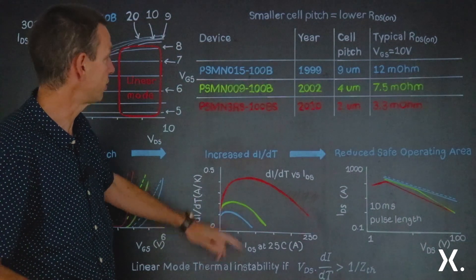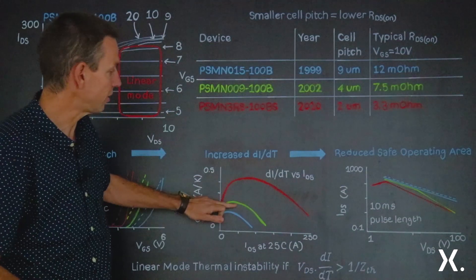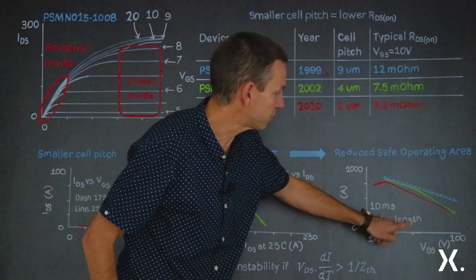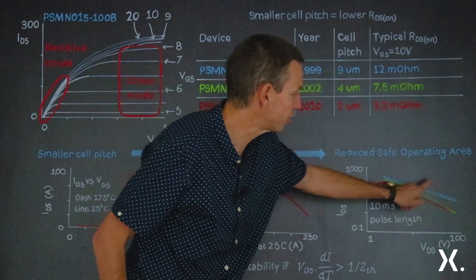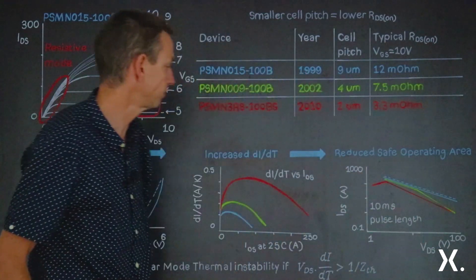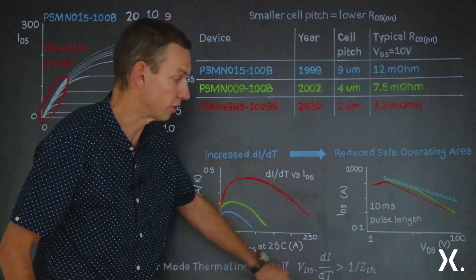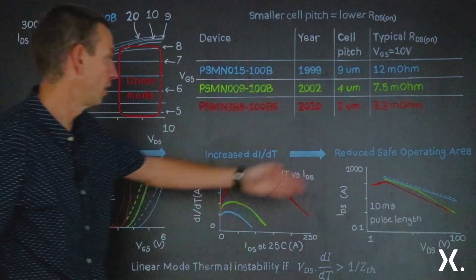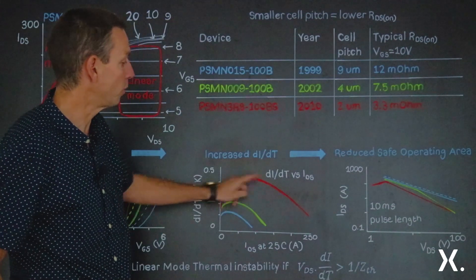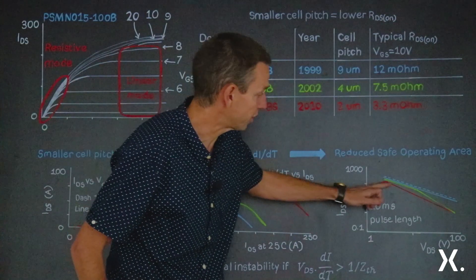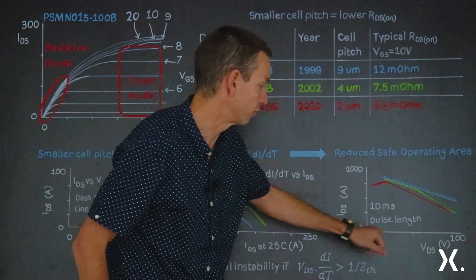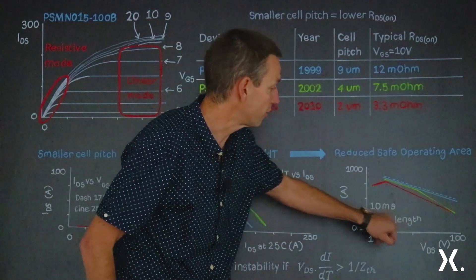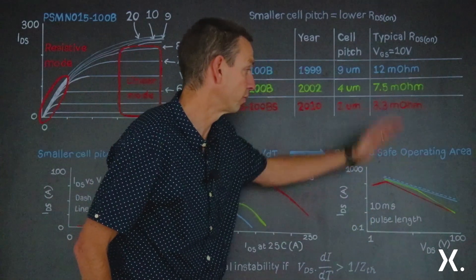Moving to the second generation, the PSMN009-100B, the dI/dT has increased. At low source-drain voltages up to about 10 volts there's no problem and we can give the full rating, but somewhere between 10 and 20 volts the characteristics had to be derated — thermal instability starts to operate and the safe operating area has been decreased. Then with the most modern MOSFET, the PSMN3R8-100BS with its 2 micron cell pitch, the dI/dT is so large that thermal instability happens far more rapidly. The safe operating area had to be derated over its whole linear mode operation, from a couple of volts all the way up to 100 volts. There is still some safe operating area, but you don't get the full entitlement you'd get from older generations.